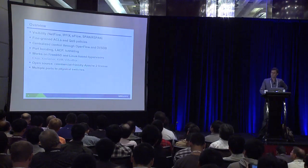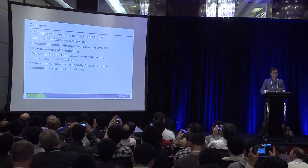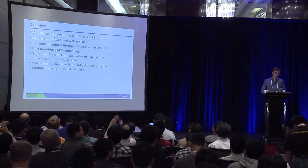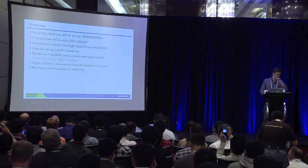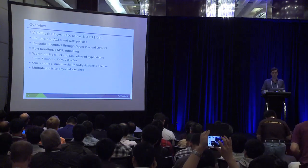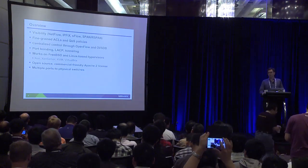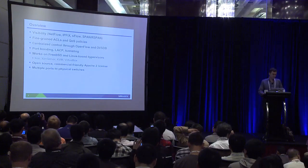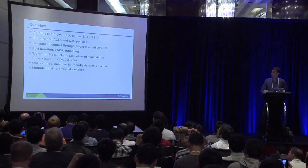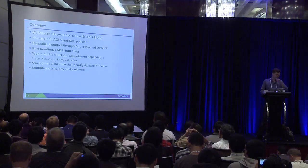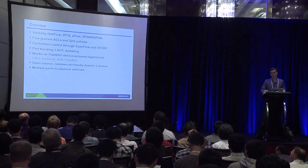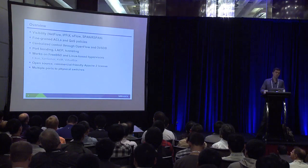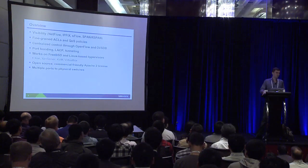Open vSwitch is a project with a virtual switch that has a lot more features than the Linux bridge. It has things like NetFlow, IPFix, SFlow, span, and spanning. You can also implement fine-grained ACLs and QoS policies with OpenFlow. In addition to OpenFlow, there's also a central management protocol that can be used to configure the configuration database. It also supports port bonding, LACP, and various tunneling. It works on a number of different platforms including Linux and FreeBSD.